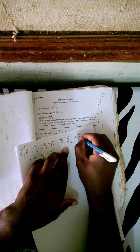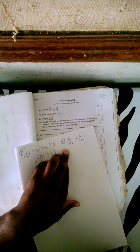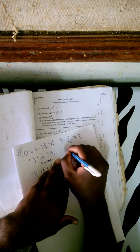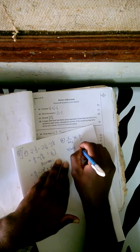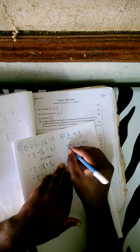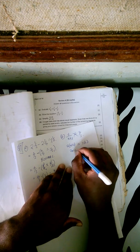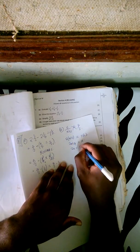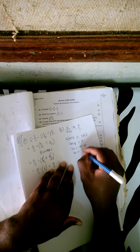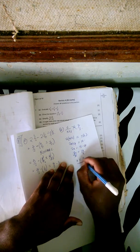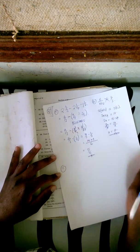Then we go to question 1b, which says: solve the equation 6 over (x plus 2) equals 2 over 3. This is actually a 3-mark question. From here we are going to cross multiply: 2 multiplied by (x plus 2) equals 3 multiplied by 6. So 2x plus 4 equals 18. Collecting like terms: 2x equals 18 minus 4, which is 14. Dividing by 2, x equals 7. This is our answer.